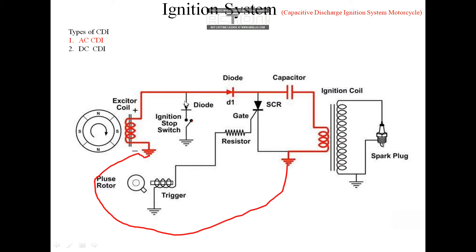There is also an ignition switch, which is your keyhole switch. There is one more switch — the engine kill switch. Both the key switch and the engine kill switch need to be on for the motorcycle to start. This is your engine kill switch and this is your key switch. These are the locations of the ignition switch and engine kill switch.